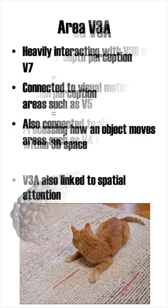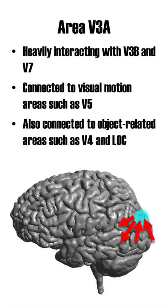V3a is heavily connected to neighboring V3, V3b and V7. V3a also sends information to visual motion area V5 and object-related visual areas such as V4a and the lateral occipital cortex.